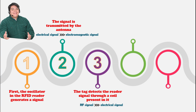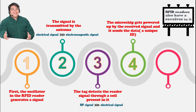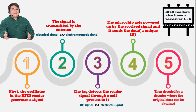When the RFID tag comes into proximity of the reader, it detects the reader signal via a coil, which converts the RF signal into an electrical signal. The microchip then powers up and sends back a unique ID stored in it through the same coil. The RFID reader's receiver feeds the returning signal to a demodulator, then a decoder retrieves the original data, which is further processed by a microprocessor to perform a specific task.